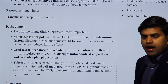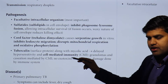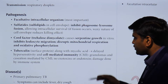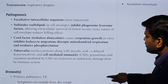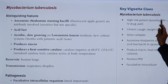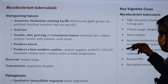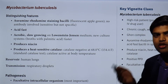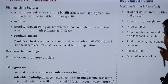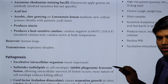Tuberculin is a surface protein that, along with mycolic acid, triggers a delayed hypersensitivity reaction (type 4) and cell-mediated immunity, leading to granuloma and caseation. There is no exotoxin or endotoxin — damage is done by the immune system. High-risk patients for Mycobacterium tuberculosis include those in poverty, HIV-positive individuals, and IV drug users. Clinical features include chronic cough, weight loss, Ghon complex, auramine-rhodamine staining, and acid-fast bacilli in sputum.